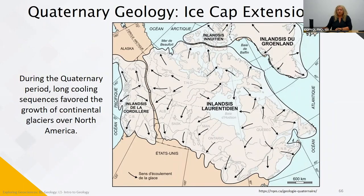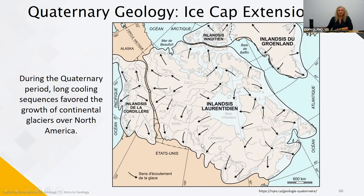Now we'll talk about quaternary geology — first how it affected the country, then Quebec's quaternary geology. During the quaternary period, we had a long cooling sequence which resulted in an entire glacier covering the country, called the Inlandsis Laurentien. The western part was called the Inlandsis de la Cordillère for BC. You can see it extended down into the States. The arrows show how it moved in all directions, scraping the earth and piling up all kinds of materials, transporting them several kilometers away. This last glaciation dates back to roughly 21,000 years ago, completely covered the country, and had a thickness of roughly 4,000 meters. It shaped the country with its erosions and sediment transportation.